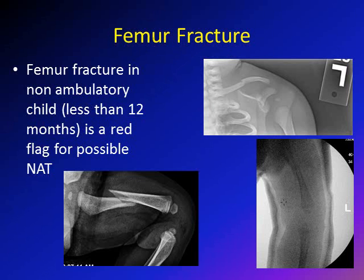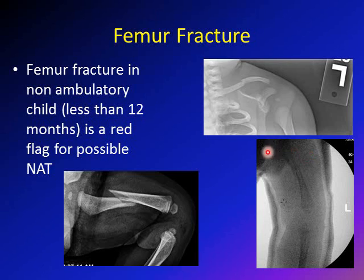Femur fractures are a common fracture in children; however, if you see a femur fracture in a child who has not yet walked, this is a red flag for possible non-accidental trauma. This nine-month-old boy came in with a spiral fracture of the femoral shaft. Since this child did not walk yet, it was a red flag. A bone survey was done and fractures of the clavicle were noted, suggesting possible non-accidental trauma with multiple fractures. The child was treated with a spica cast.